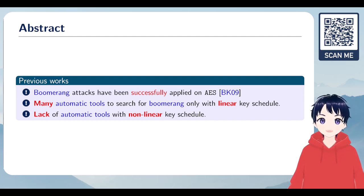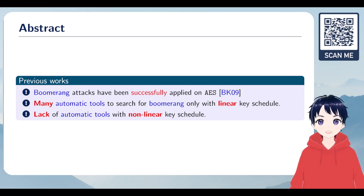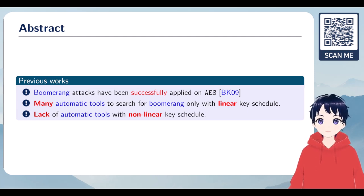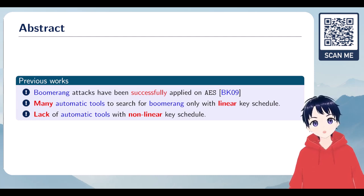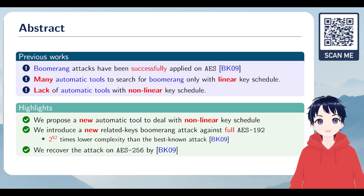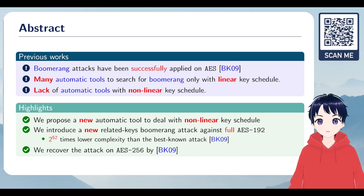A few years later, several MILP models were introduced to search automatically for boomerang distinguishers and boomerang attacks on block ciphers. But they can only be used when the key schedule is linear. In this work, a new model is introduced to deal with nonlinear key schedules, as is the case for AES.